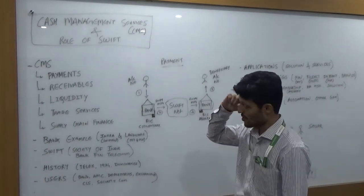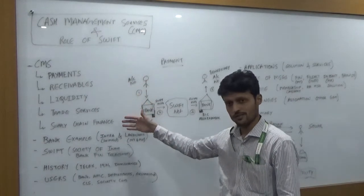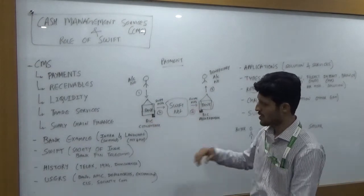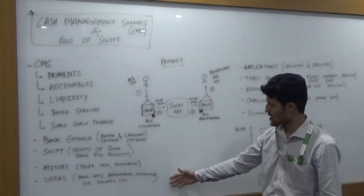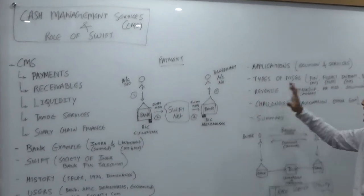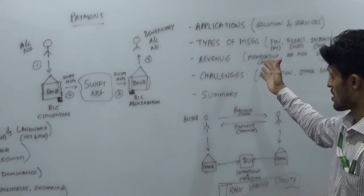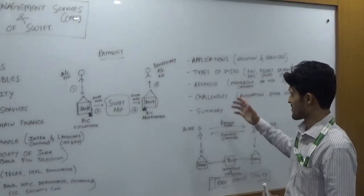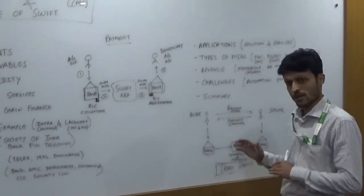I will walk you through the flow of what we are going to cover today. The cash management services, which includes components like payments, receivables, liquidity, trade services, and supply chain finance. We'll keep it small and simple. There will be a couple of examples, followed by what SWIFT is, its history, the users, live demo environment examples, hosted applications, types of messages used in the SWIFT network, the revenue model, challenges in today's environment, and finally a summary.